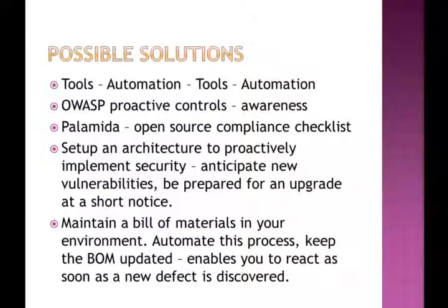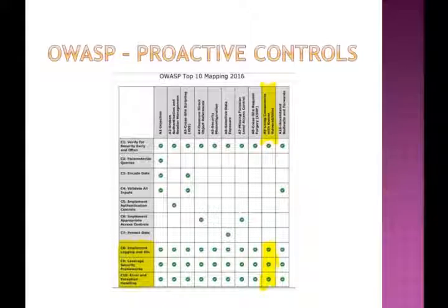Set up an architecture to proactively implement security — anticipate new vulnerabilities and be prepared. Being proactive is the same as being prepared. I continuously like to stress that if your vulnerability is not there today, it is going to happen tomorrow. Maintain a bill of materials. The OWASP proactive controls released in 2016 highlight the fact that there is a lot of knowledge out there for developers to look into third-party libraries. Implementing logging, leveraging security frameworks, and error and exception handling all connect with securing third-party components.